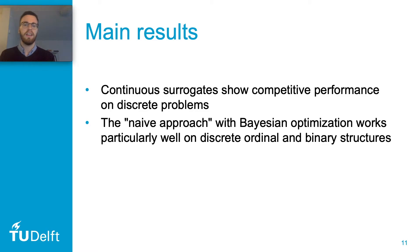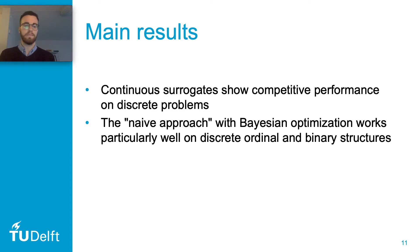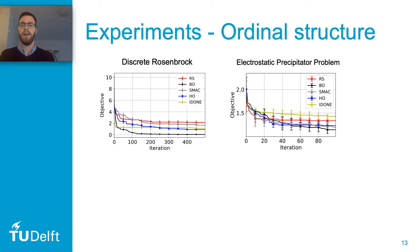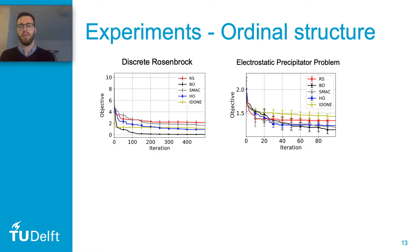The main result we'll show is that continuous surrogates actually show competitive performance on discrete problems. In fact, this naive approach with Bayesian optimization works really well, particularly on discrete ordinal and binary structures. The experimental setup uses a strict evaluation budget of up to 500 evaluations, since we assume the objective function is expensive to evaluate. We test on relatively large dimensionalities and on different structures such as the ordinal structure shown first.